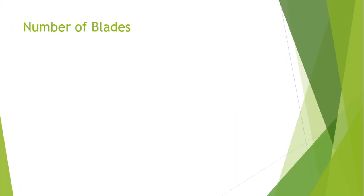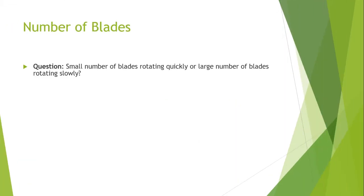Now let's discuss the number of blades and the trade-offs associated with the number of blades in a wind turbine. Small numbers of blades rotating quickly, as in a high-speed two-blade rotor design, versus a large number of blades which tend to rotate slowly.